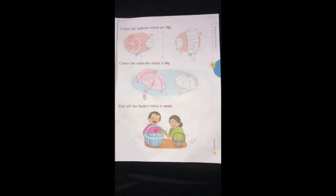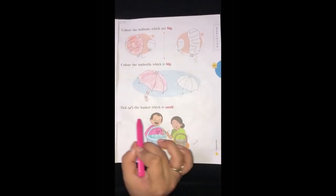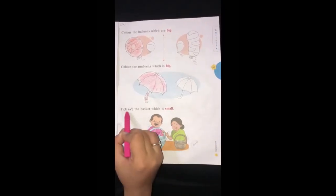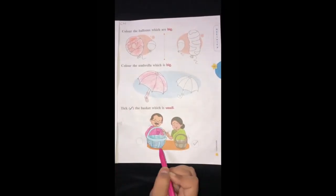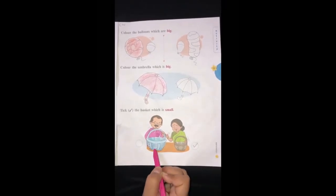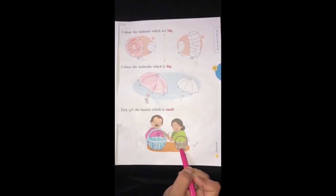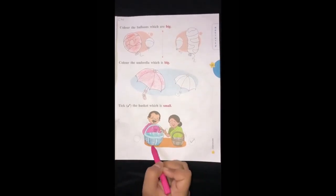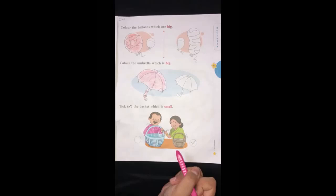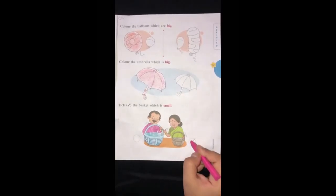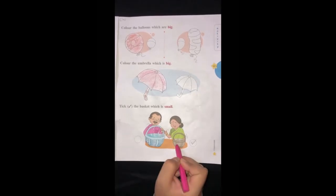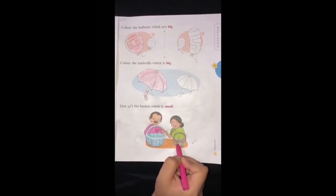Next activity is tick the basket which is small. You have to tick the small basket. There are two baskets, blue basket and brown basket. So you have to find which basket is small. Yes, the brown basket is small in size. So you have to put a tick on brown basket. Very good.